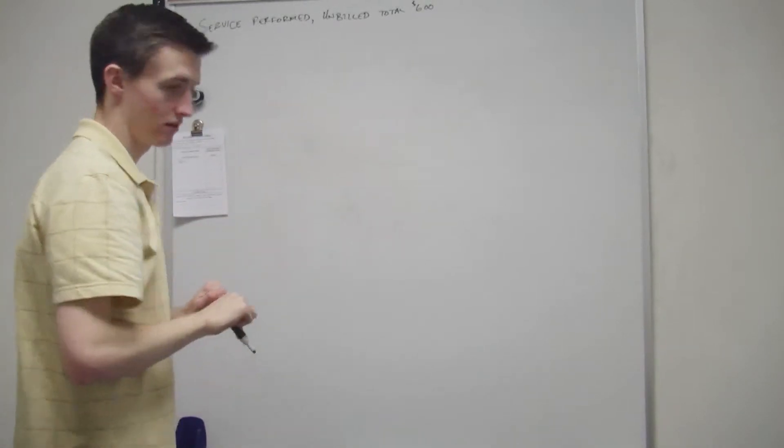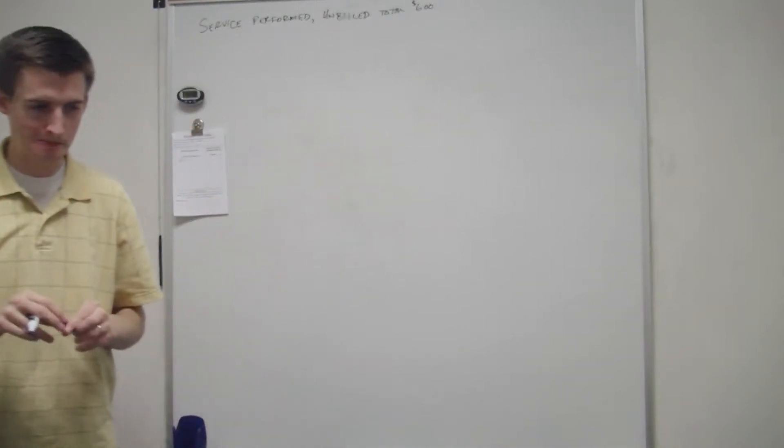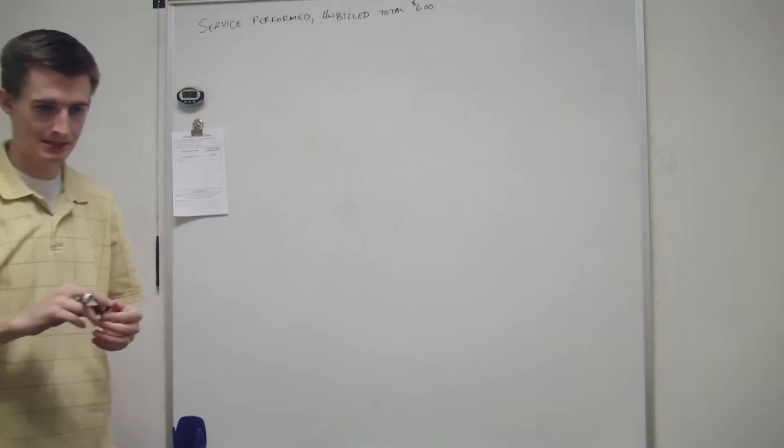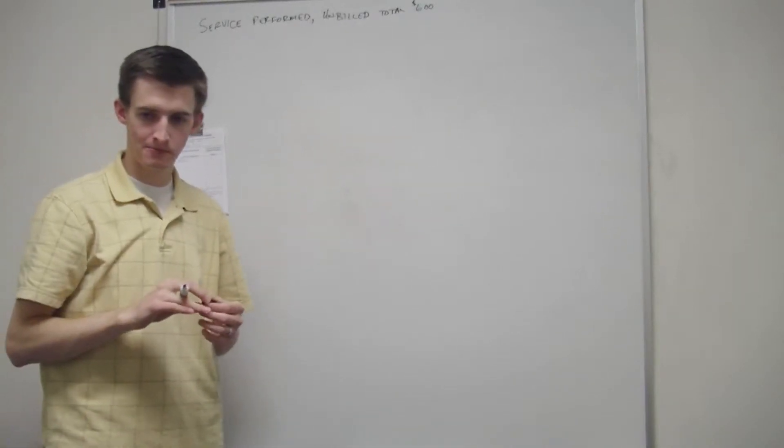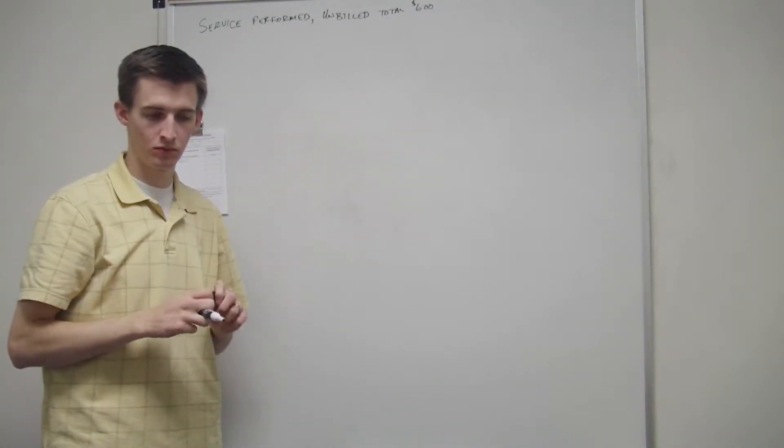And then, so basically I'm wondering what kind of adjustment it is. Accrued expense, unearned revenue, prepaid expenses, or accrued revenues.